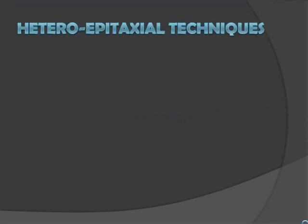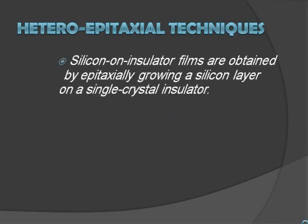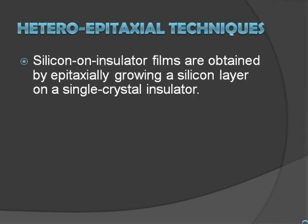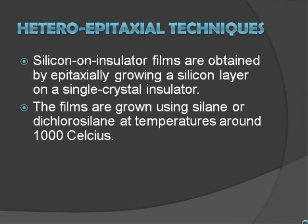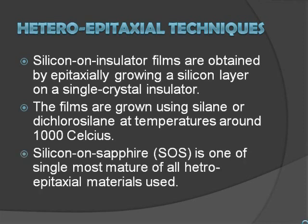First, there is the heteroepitaxial technique. In this technique, SOI films are obtained by epitaxially growing a silicon layer on a single crystal insulator. Silicon on Sapphire, shown in the next picture, is the most mature of all types of heteroepitaxial techniques.